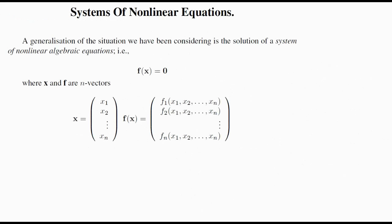In formal notation, f is now a vector. We have functions f1, f2 up to fn, which depend on variables x1, x2 up to xn — the x vector represents all variables. In the example we had x and y, so that's a two-variable, two-function system. These vector functions equal the zero vector, and that's what we're formally solving.